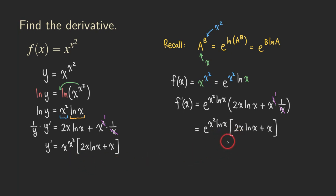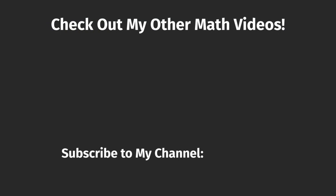You can see the answers look different, but e to the x squared ln of x is actually just our original function, so we replace it and get the same answer. Which way do you like better? Please leave me a comment. If you like this video, give me a like, subscribe to my channel, and share my videos — it gives me support to make more videos. If you have questions or a topic you want me to cover, please leave a comment. Thank you for watching!